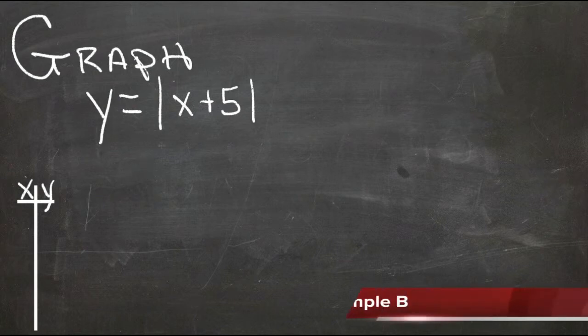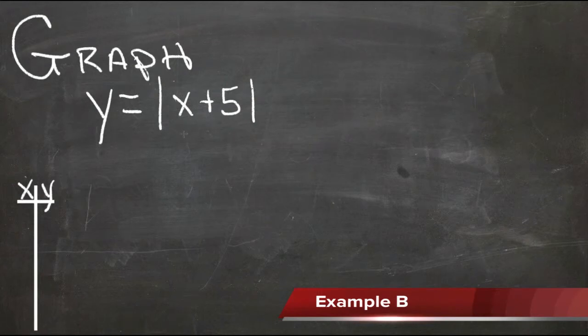Here we have another absolute value equation, y equals the absolute value of x plus 5. We'll solve it similar to the way we did last time, only now we're going to do a little bit of educated guessing. We know that last time, when we had the absolute value of 0, we got the point where y turned around. So let's see if we can find that first.